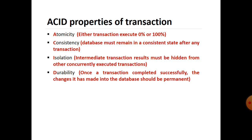Atomicity means a transaction executes either zero percent or one hundred percent. Consistency means the database must remain in a consistent state after any transaction. Isolation means intermediate transaction results must be hidden from other concurrently executing transactions. Durability means once a transaction is completed successfully, the changes made to the database should be permanent.